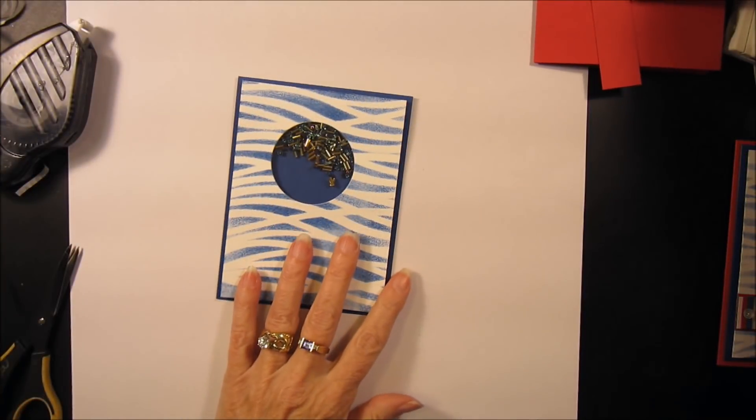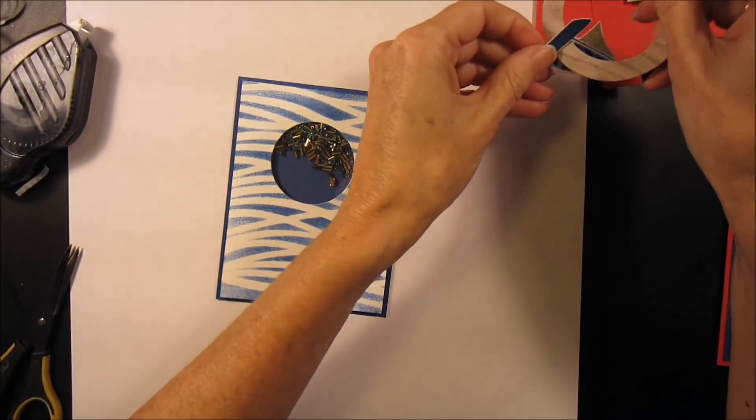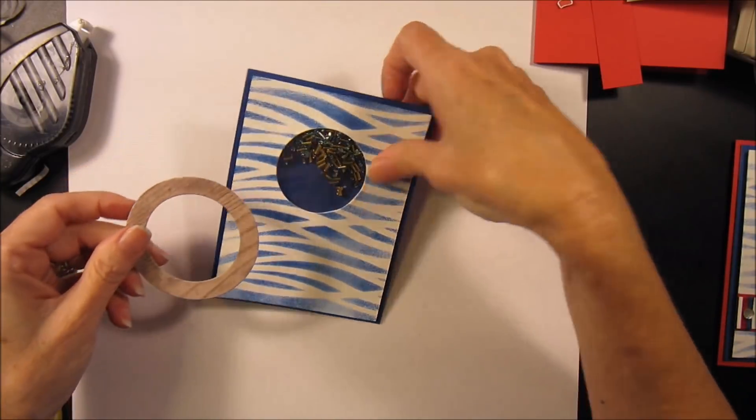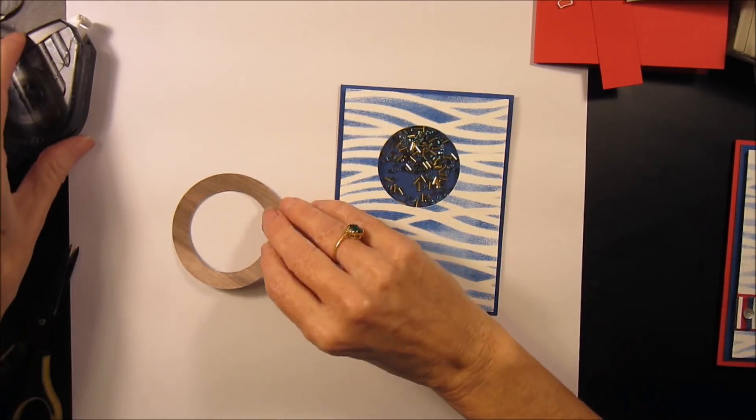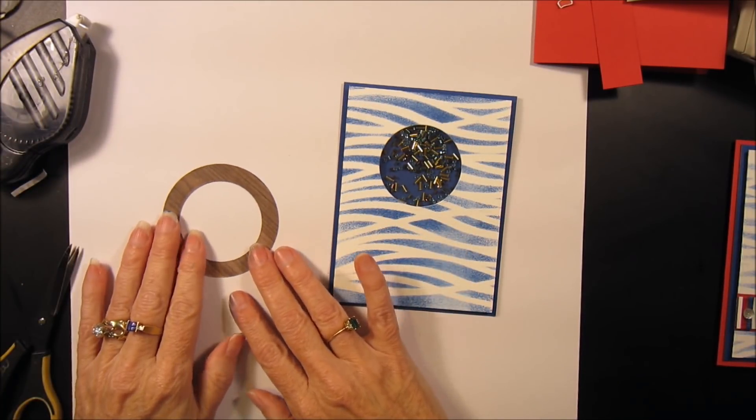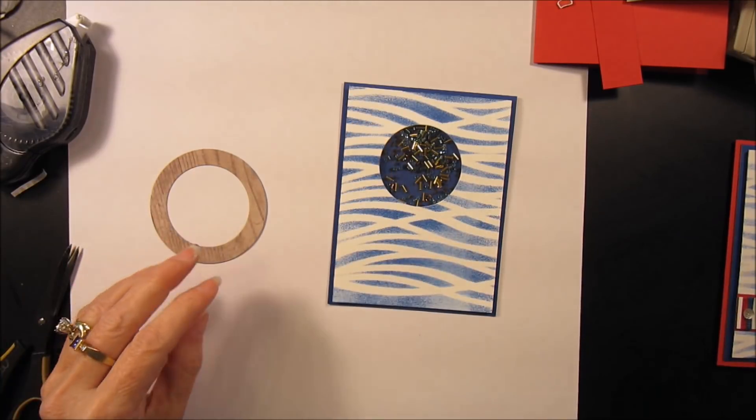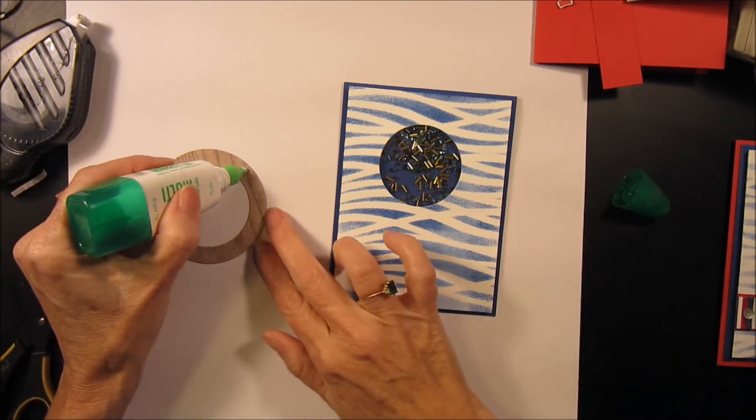So now we can place our porthole on and I'm going to go ahead and just use liquid glue for that.